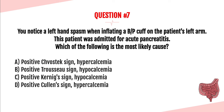Question number seven. You notice a left hand spasm when inflating a blood pressure cuff on the patient's left arm. The patient was admitted for acute pancreatitis. Which of the following is most likely the cause? A. Positive Chvostek's sign, hypercalcemia. B. Positive Trousseau's sign, hypocalcemia. C. Positive Kernig's sign, hypocalcemia. Or D. Positive Cullen's sign, hypercalcemia. The answer is B — positive Trousseau's sign associated with hypocalcemia.